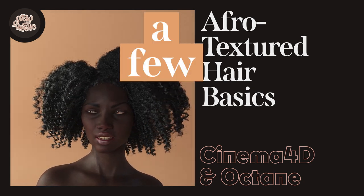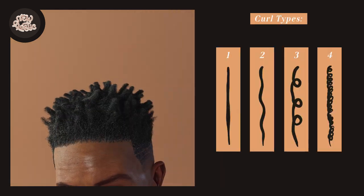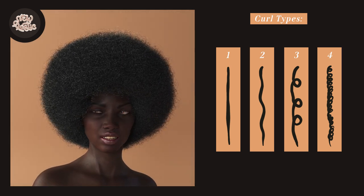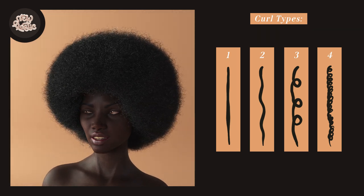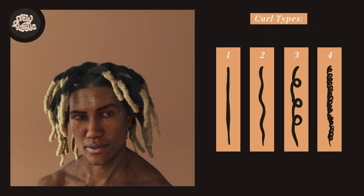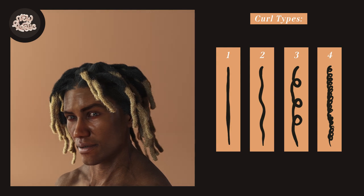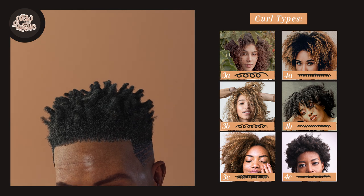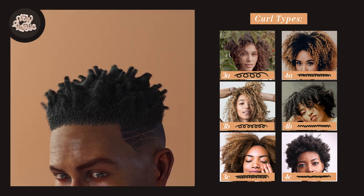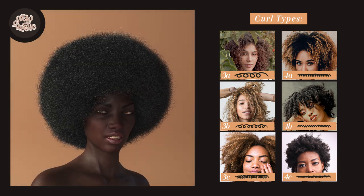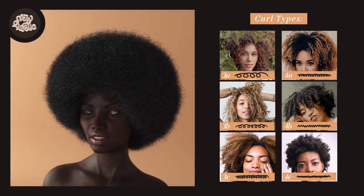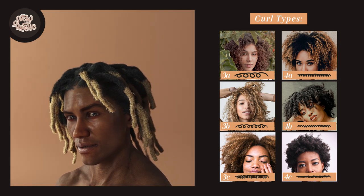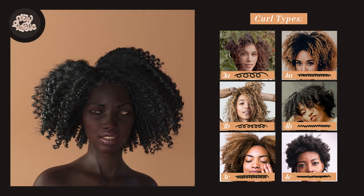Let me quickly go over a few simple hair terms before I start. Curl types are assigned letters and numbers to imply the amount of curl a hair has. It goes from one to four, one being completely straight and four being extremely curled. Each category has three subcategories, A to C, to imply the curl strength within that type. Afro-textured hair only comes in levels three and four. Levels 4B and 4C are easier to make because the curls are so tight they form a zigzag or kink pattern.